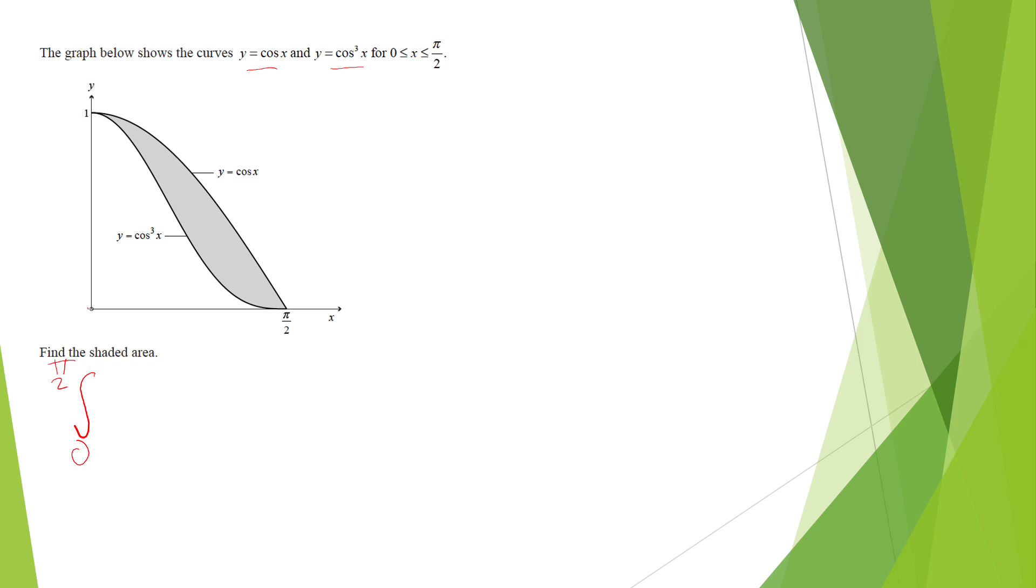The lower boundary is 0, the upper boundary is π over 2. Now the top curve minus the bottom: cosine x minus cosine cubed x dx. Now I'll integrate that. I don't have any trig identity with cosine cubed, so you need to think of factorization. If you can't find a trig identity and see a common factor, get that out first. So cosine x is my common factor: 1 minus cosine squared x. And I know 1 minus cosine squared x is sine squared.